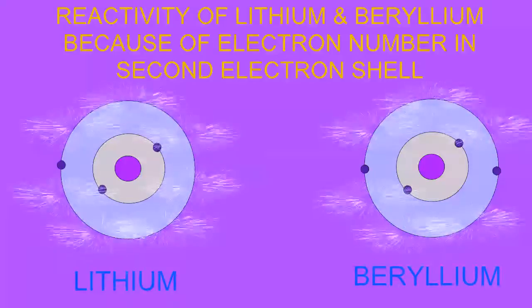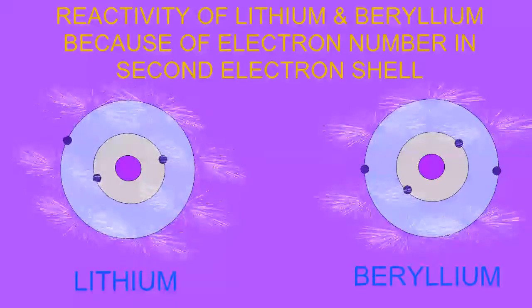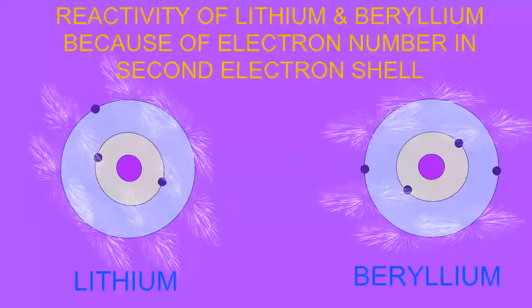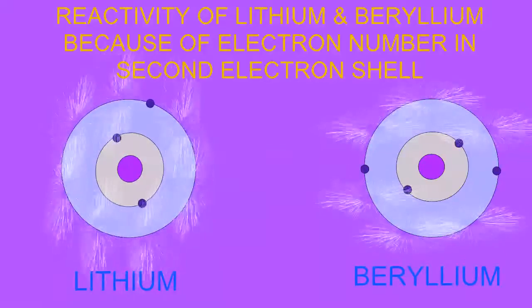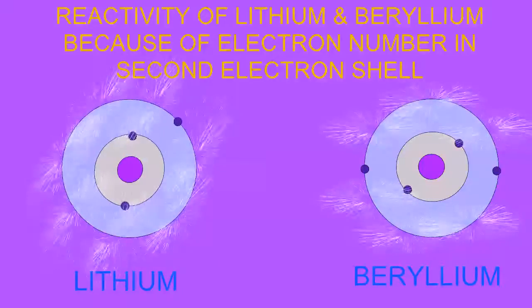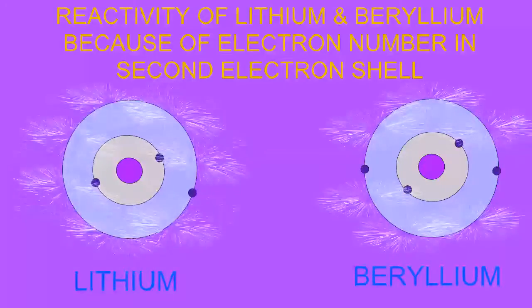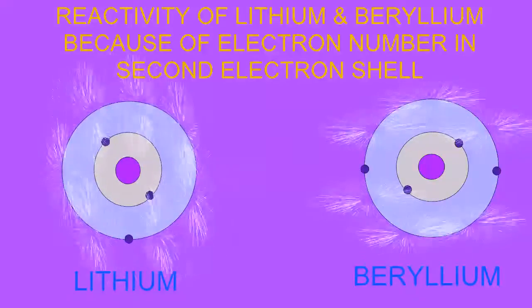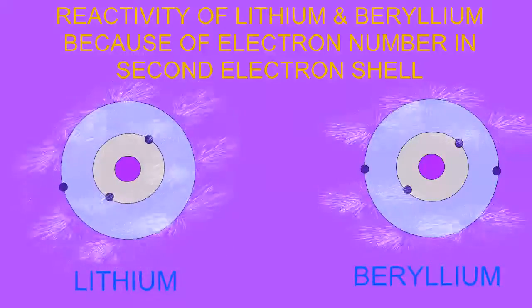The atom lithium possesses three electrons, two which fill the 1s orbital of the first shell, and one single electron in the 2s orbital of the second shell.